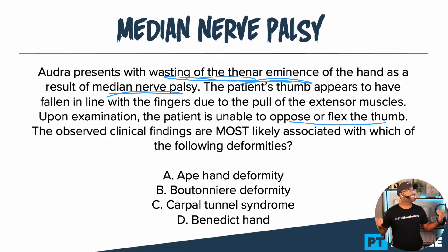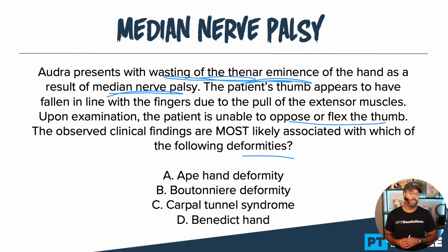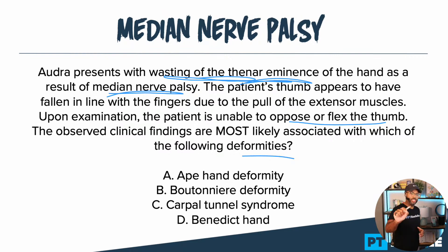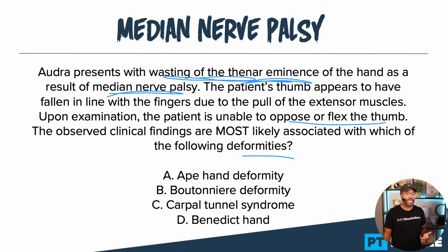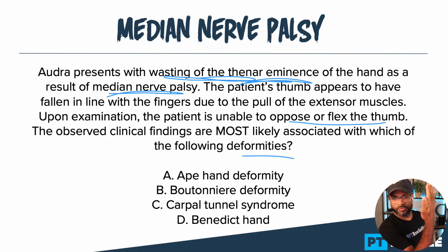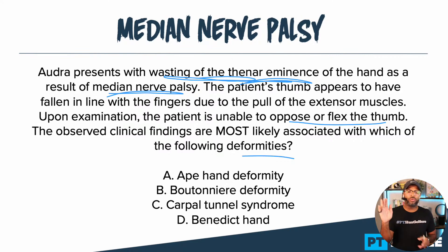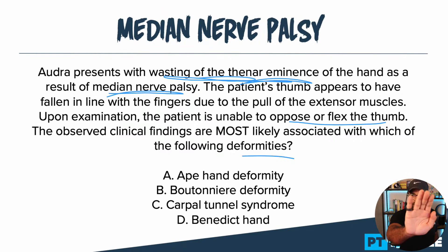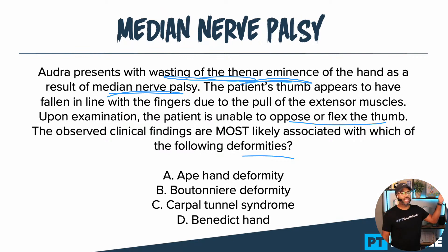The observed clinical findings are most likely associated with which of the following deformities — we're looking for a deformity as the final answer. Let's go down into our answer choices and rule them in or out. Answer A: ape hand deformity. An ape hand deformity is where the thumb falls in line with the other fingers and is more in that adducted position. The patient has difficulty abducting, opposing, and flexing the thumb — it's stuck in that position. This already sounds really good and fits what the question is saying.